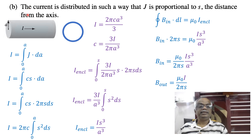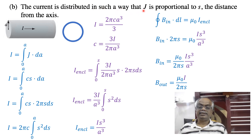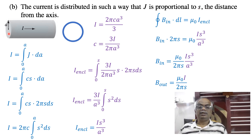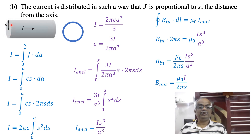Now we will see Part B. In this section, the current density j is proportional to s, the distance from the axis. So j ∝ s. In the previous case, the current was uniformly distributed over the surface, but now the current is distributed throughout the volume with j proportional to s.